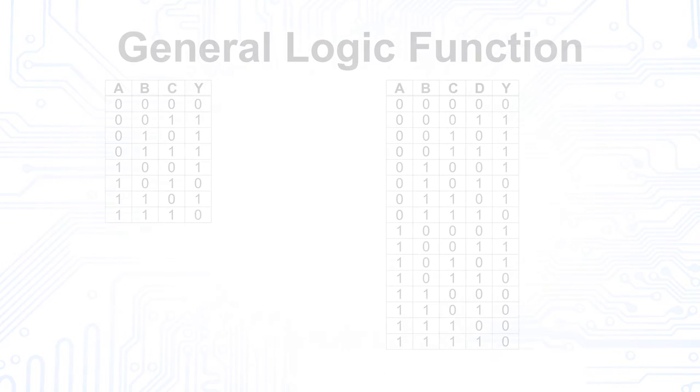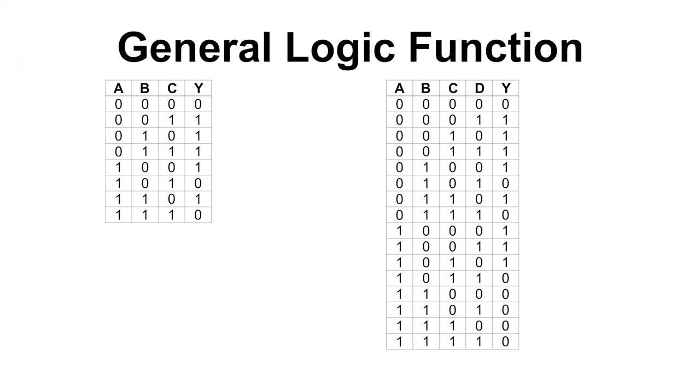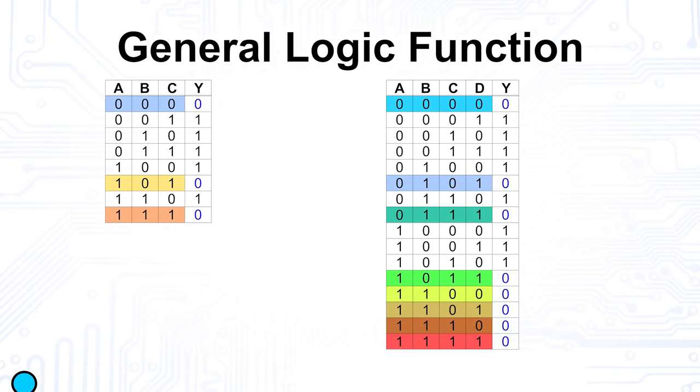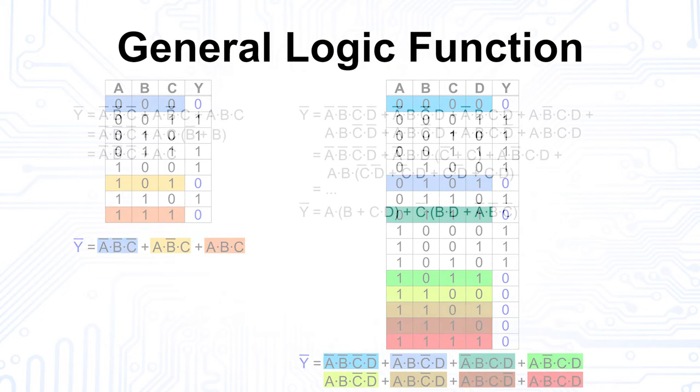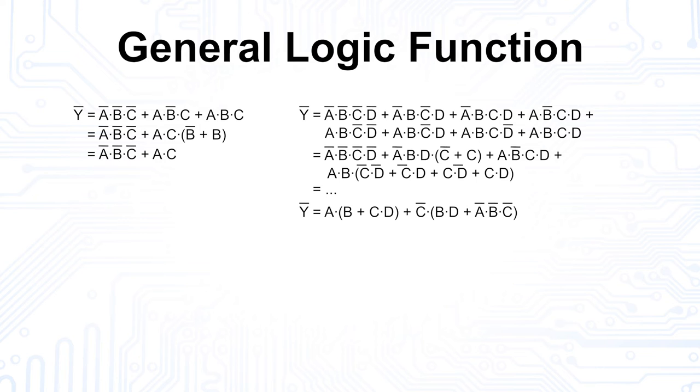From the tables, we now want to derive the boolean equations again. So, we look for all the lines, for which our output becomes low, and write the equations for y dash. As you can see, this gives us very long boolean equations. If we would implement the CMOS circuit like this, we would need a huge number of MOSFETs. We should therefore simplify these equations using all the available rules of boolean algebra to arrive at the minimized form.